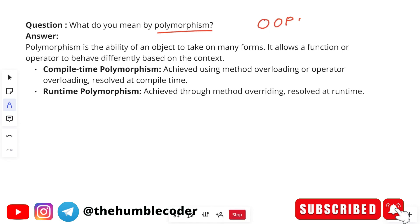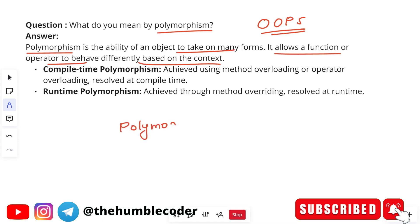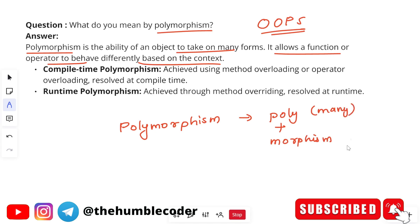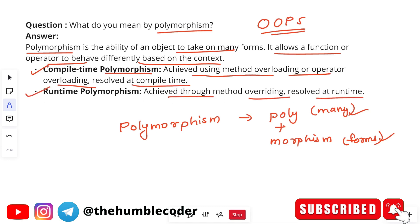What do you mean by polymorphism? OOP is heavily asked. Polymorphism is the ability of an object to take many forms — it allows a function or operator to behave differently based on context. The word polymorphism comes from 'poly' meaning many and 'morphism' meaning forms. Compile-time polymorphism is achieved using method overloading or operator overloading, resolved at compile time. Runtime polymorphism is achieved through method overriding, resolved at runtime.